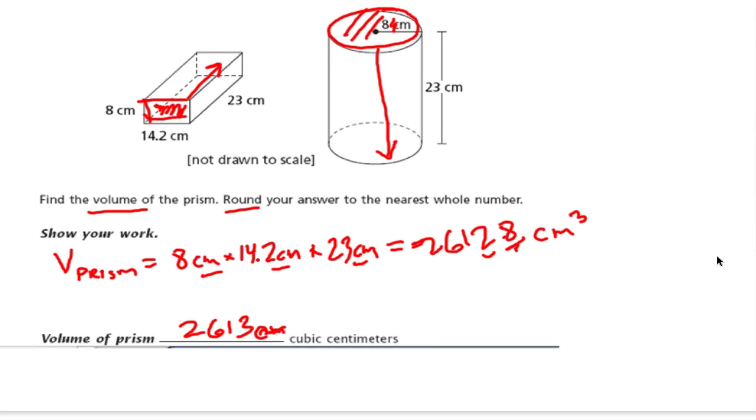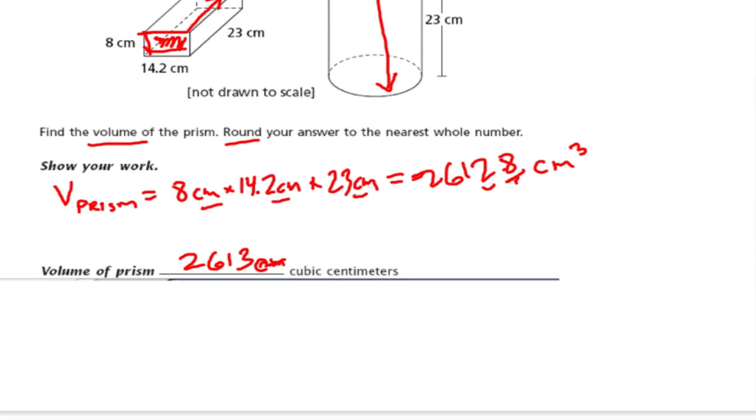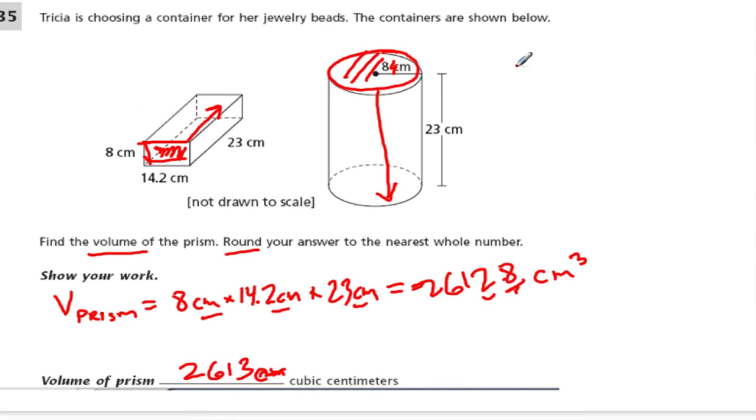Now for the cylinder, we have the area of the circle, which is going to be pi times radius times radius, and that times the height. The height is 23 centimeters. The radius is 8 centimeters, so 8 times 8 is 64 centimeters. And then times pi.